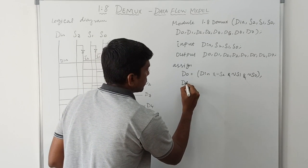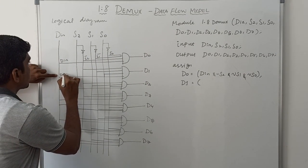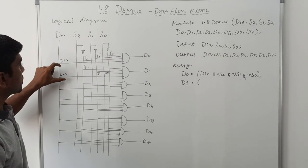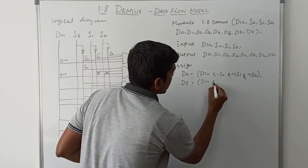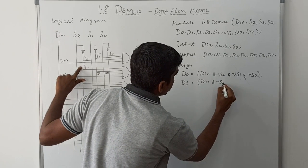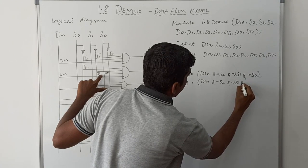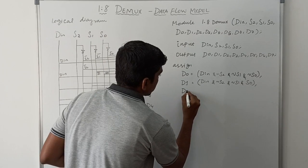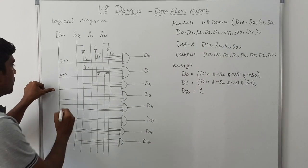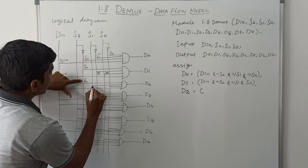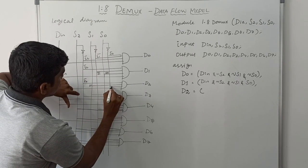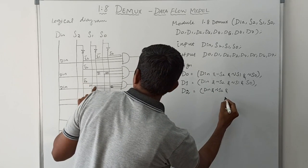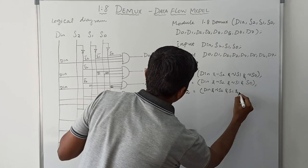Next, assign D1: D1 = DIN & (~S2) & (~S1) & S0. D1 function done. Then take D2: D2 = DIN & (~S2) & S1 & (~S0). And assign D3: inputs are DIN, not-S2, S1, S0. Write: D3 = DIN & (~S2) & S1 & S0.